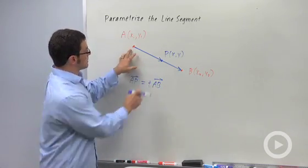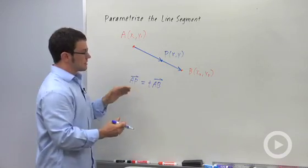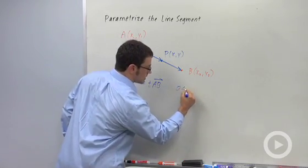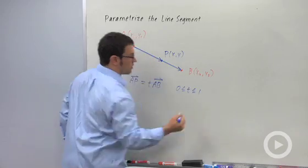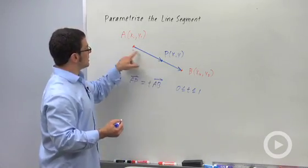And you know that because AP is smaller than AB, that this is going to be some kind of compression. That means that T is going to be between 0 and 1, as long as point P is between these two guys.